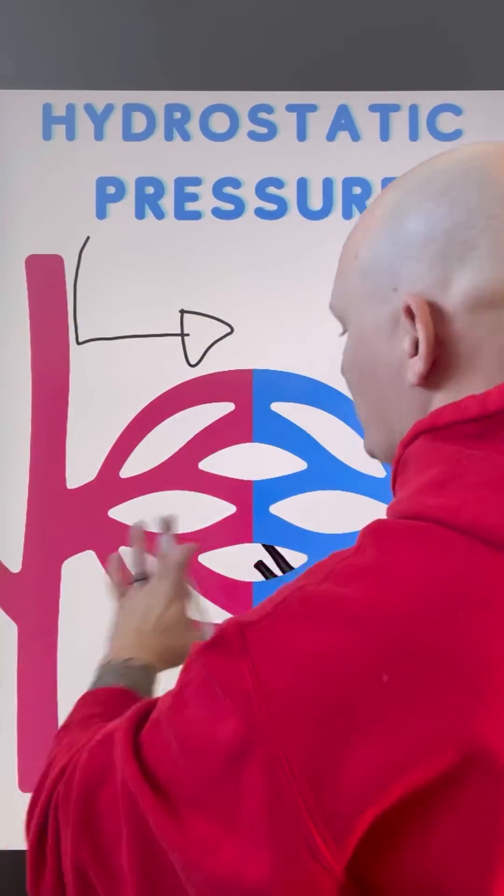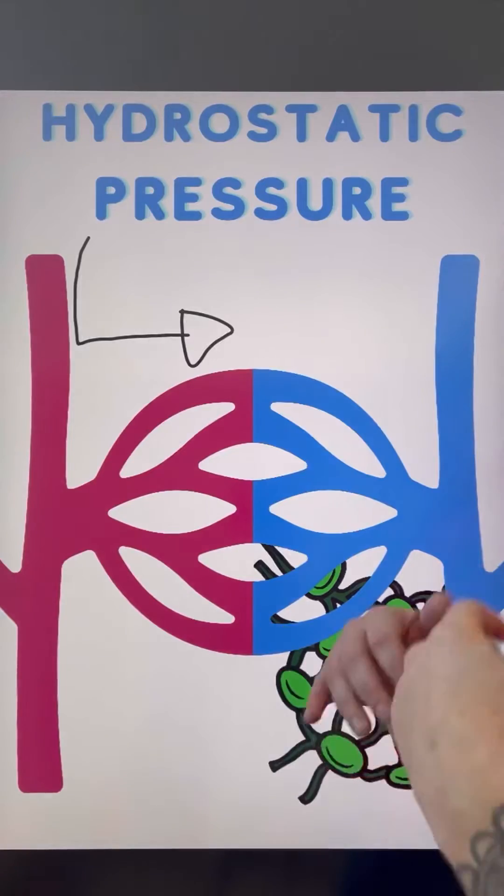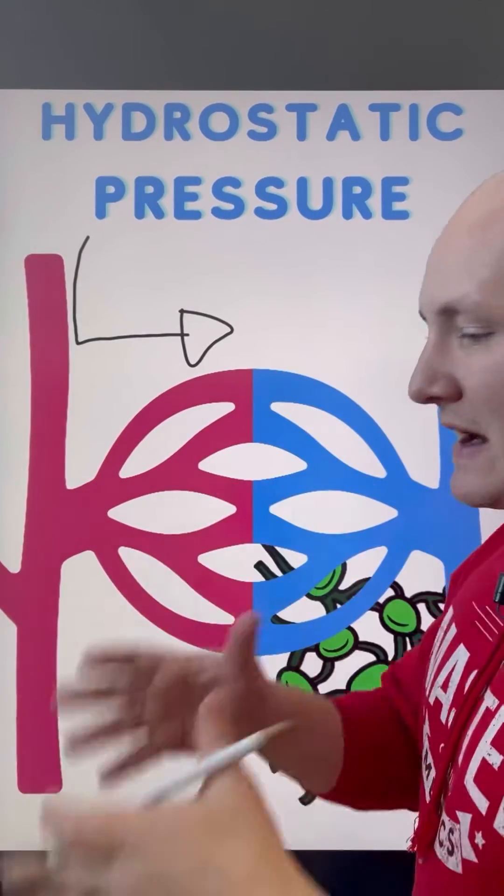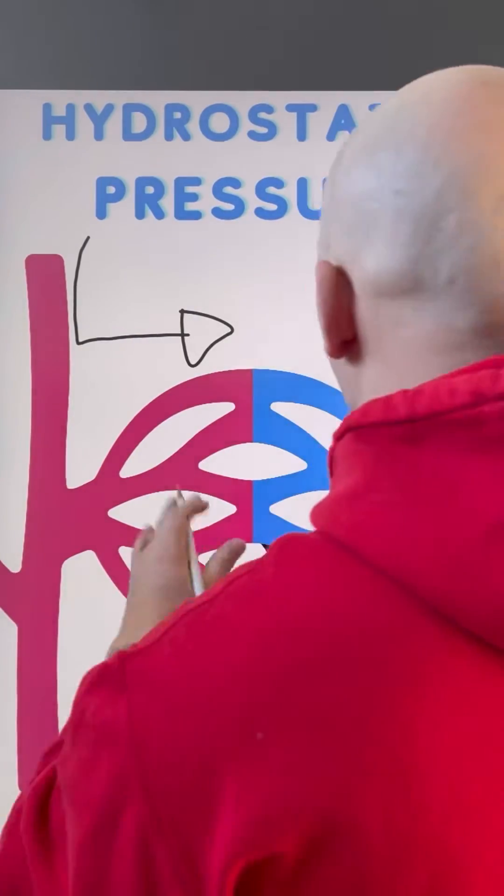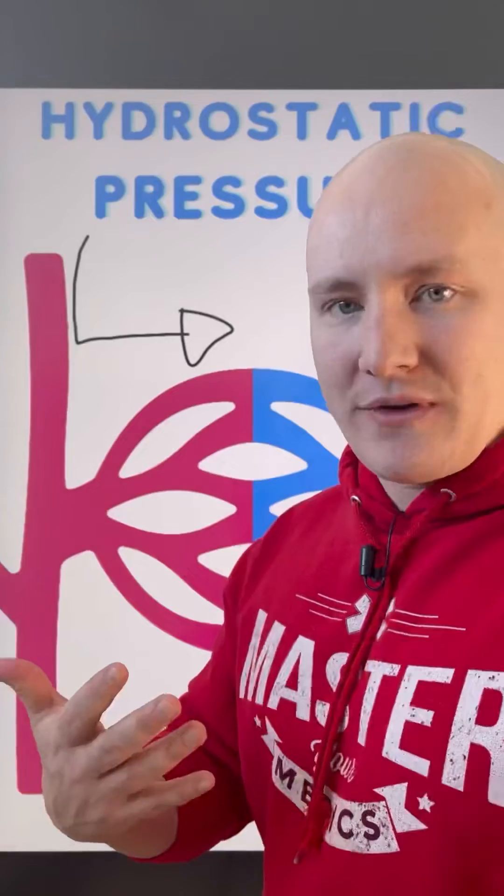Now, movement of blood is very strong this way because we have the entire force of the left ventricle pumping effectively and pumping strong to move blood forward this way. However, on the venous side, blood doesn't move nearly as fast.